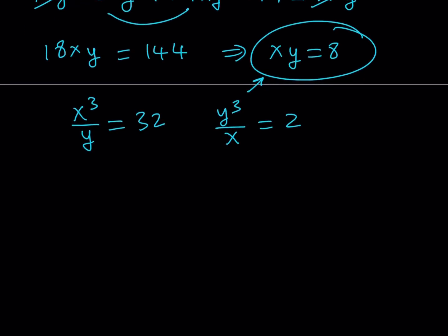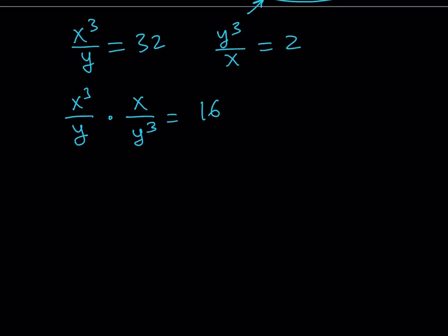So x cubed over y multiplied by a reciprocal of the second fraction, which is x over y cubed, is going to be 32 divided by 2, which is equal to 16. I get x to the 4th divided by y to the 4th is equal to 16.